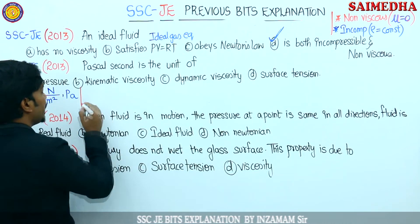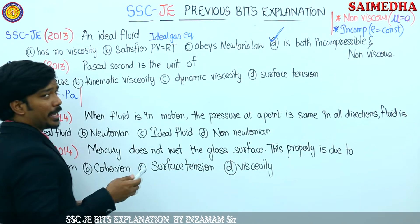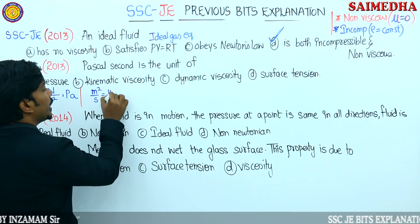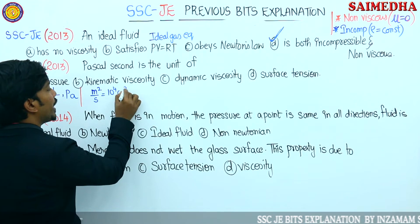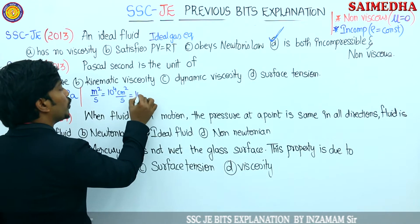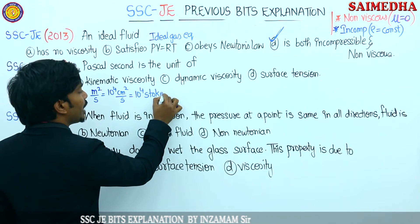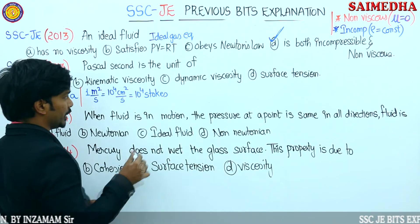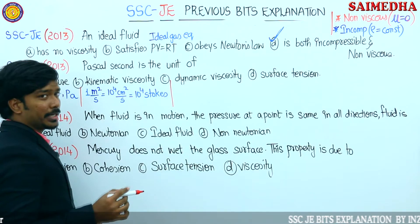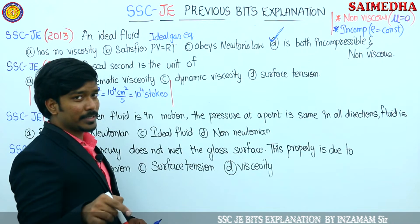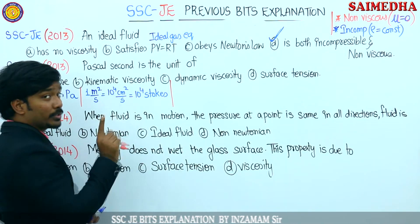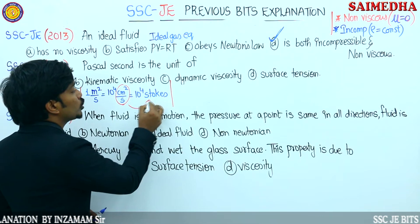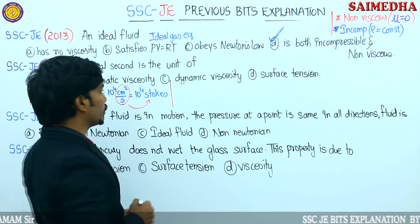Next: kinematic viscosity. Kinematic viscosity is dynamic viscosity divided by density, that is meter square per second. That equals 10 to the power of 4 centimeter square per second, or 10 to the power of 4 stokes. These are the standard values you need to remember for kinematic viscosity. Centimeter square per second is called stokes - that is an important point.